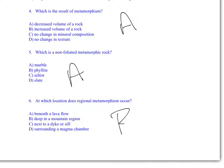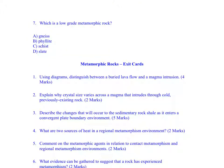Which is a low-grade metamorphic rock? Well, gneiss is an extremely high grade, phyllite is a medium grade, schist is a high grade, so slate is the low-grade metamorphic rock. So the answer is D.